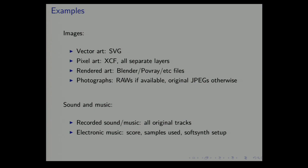Some examples of source code: for images, if you have vector art, SVG files can be the source. If you have pixel art and use GIMP, use the native GIMP file format XCF, which preserves all the layers. If you have computer-rendered art made in Blender or POV-Ray, use all the source files for those programs. For photographs, raw files are preferable since you can do more with them — if that's your preferred way of working, that is definitely the source. Cameras that cannot produce raw files, original JPEGs are fine as well.